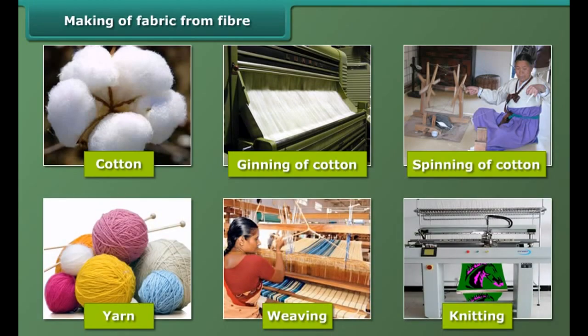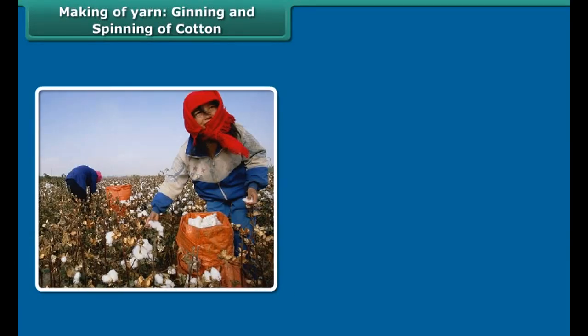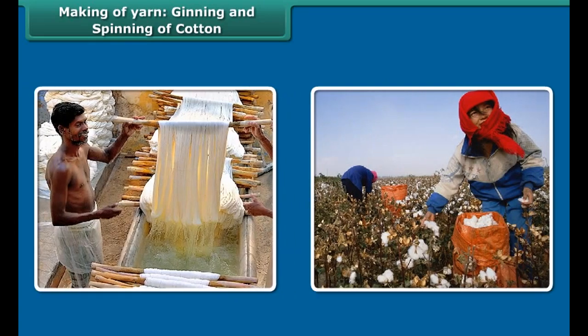Making of fabric from fiber: First, yarn is made from fiber, and then fabric is made from yarn. To make yarn from cotton, cotton is picked by hand from cotton bolls and then the fiber from the seeds is separated by combing. This process is called ginning. Ginning can also be done by machines.